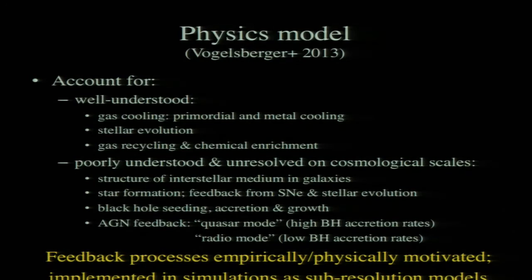Initially the material in the universe was just hydrogen and helium, but through nuclear reactions in stars, heavier elements are formed, and some can be deposited into gas around star-forming regions and around galaxies through galactic winds. However, there are a number of things we don't understand very well that need to be included but cannot be resolved in cosmological-scale simulations. These include the structure of star-forming gas in galaxies, exactly how gas turns into stars, feedback from supernovae and stellar evolution driving outflows, the growth of supermassive black holes through gas accretion, and how energy from that process can affect galaxy properties on larger scales—the process of AGN feedback.